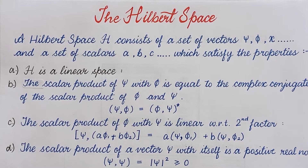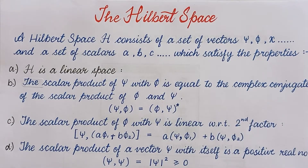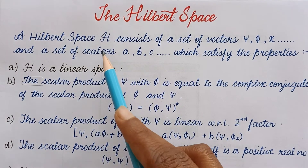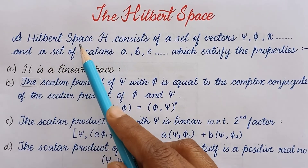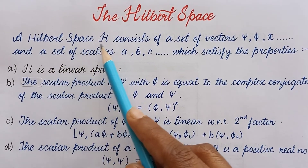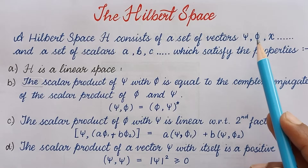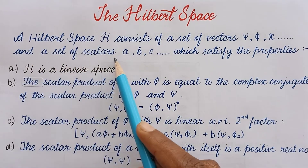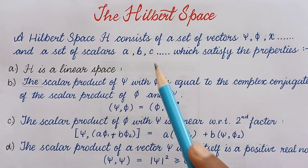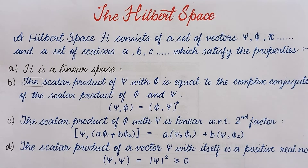The first topic that comes is the Hilbert space. What is Hilbert space? A Hilbert space, which is also denoted by H, consists of a set of vectors like psi, phi, chi, etc., and a set of scalars like A, B, C, etc., which satisfy the following properties.